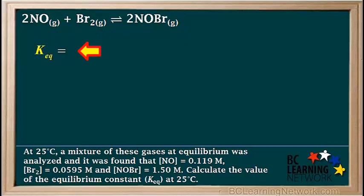Now, K_eq equals product over reactants, so concentration of the product, NOBr, goes on top, and the coefficient on NOBr in the equation is 2, so we write the exponent 2 on the concentration of NOBr.